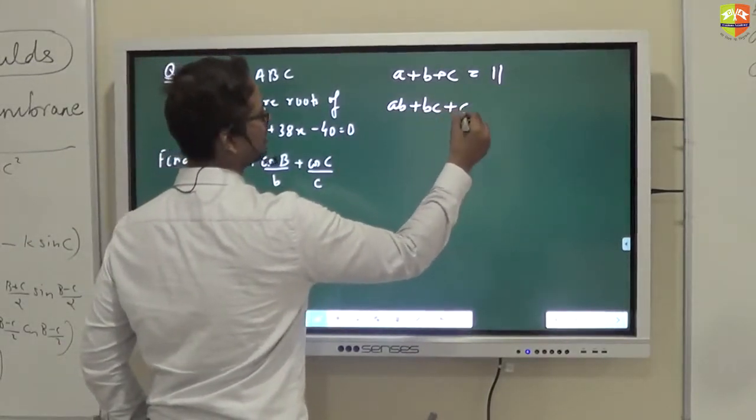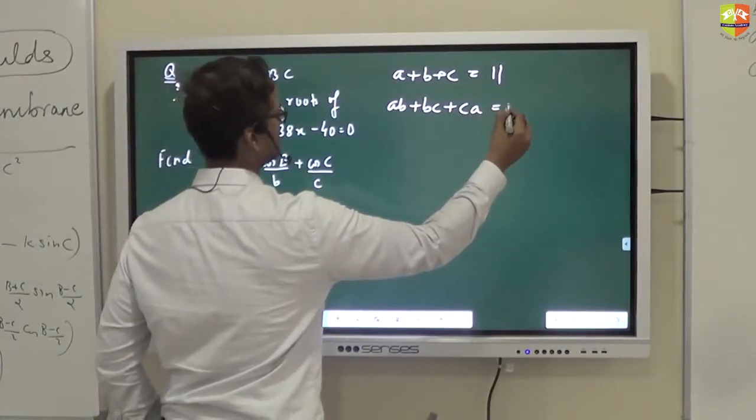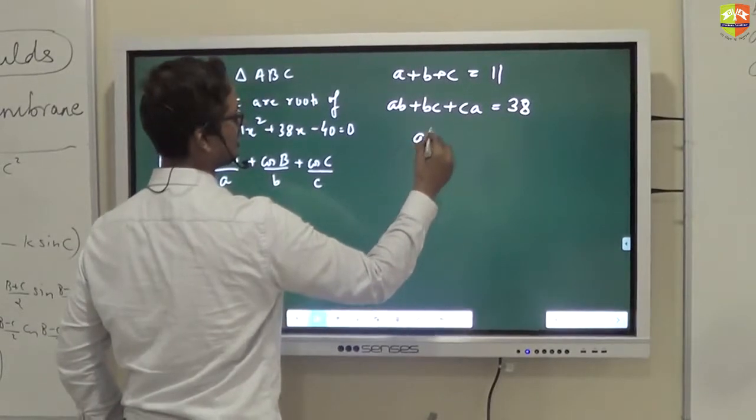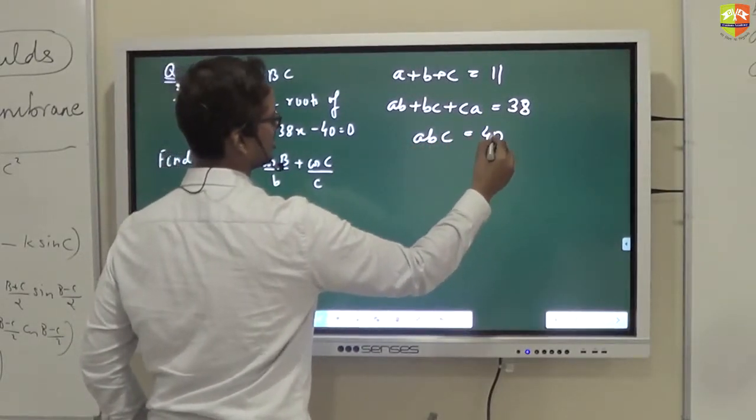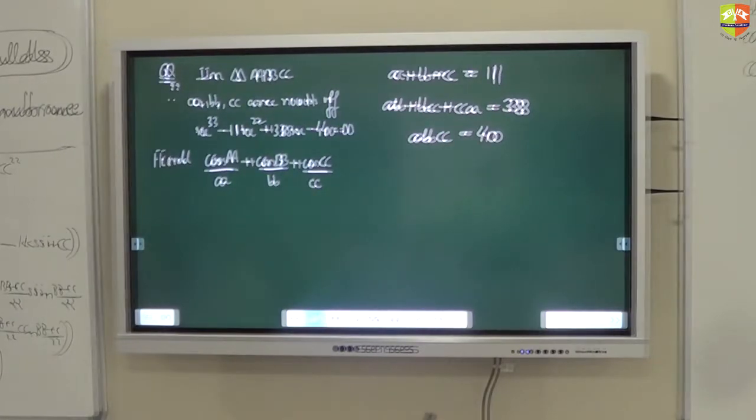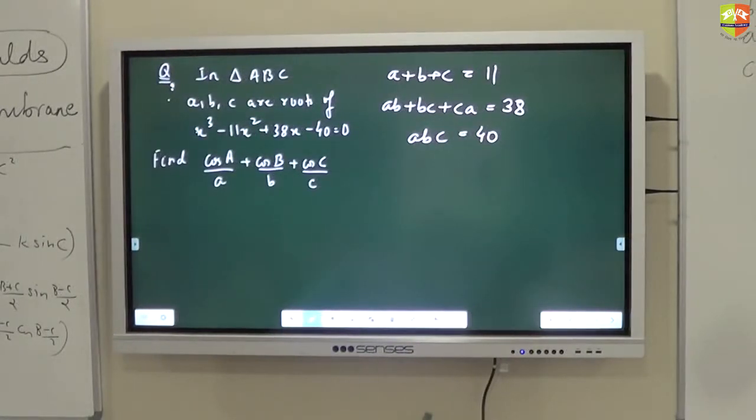Product of the roots 2 at a time. Sir, please don't tell us. Sir, I think I got the answer. Sir, got it. Sir, what are the sides? You don't need the sides.